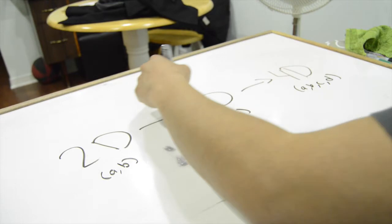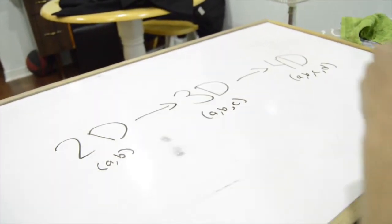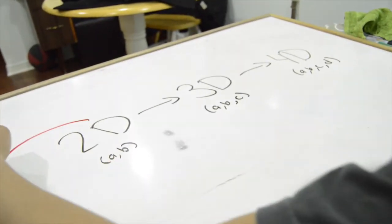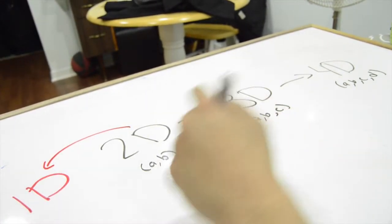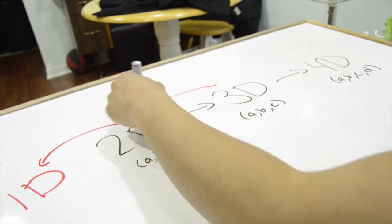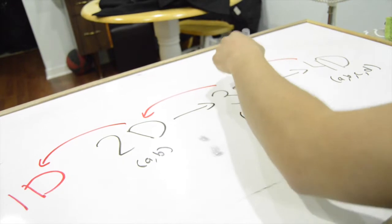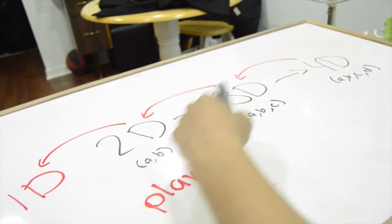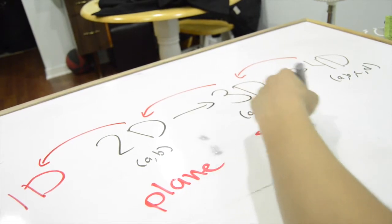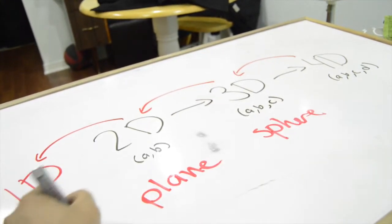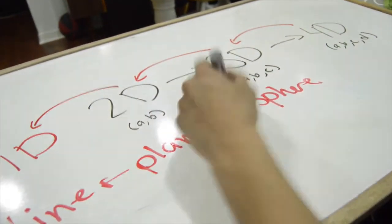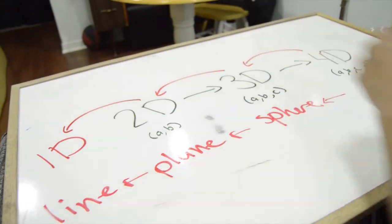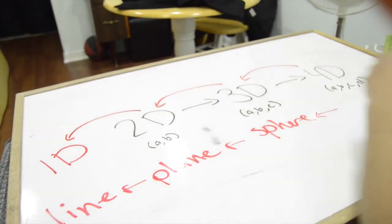If you've noticed the trend, from 2D to 1D, we went from a circle to a line, and then from 3D to 2D, we went from a sphere to a plane. So, we can safely assume when projecting from 4D to 3D, the result will be somewhat of a sphere or a spherical object.